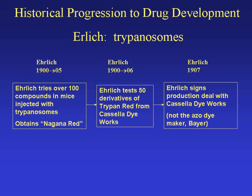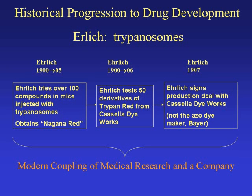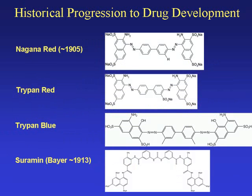By 1907, Ehrlich had a production deal with Casella Dye Works to produce an organic dye as a medicine for trypanosomes. He did not use the azo dye maker Bayer, which had been the source of many of his other organic compounds — the company Bayer is also known today as Bayer Pharmaceutical Company. So by 1907 we have a full drug development pipeline, including the modern coupling of medical research and a pharmaceutical company. Also present at this very earliest stage of modern drug development were those two ubiquitous features: intellectual property disputes and contract disagreements.